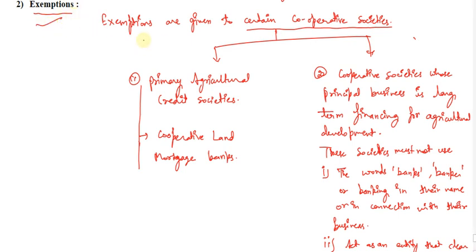Under exemption, certain exemptions have been given to certain cooperative societies. These are as follows: First is the primary agriculture credit society. This particular society is exempted. Cooperative land mortgage banks are also exempted under this.